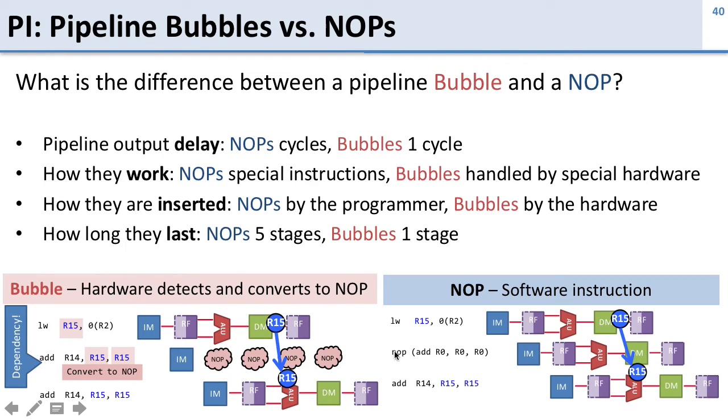The instruction to a NOP - so it puts in the NOP. And if we just use a NOP outright, it's a software instruction, so the software, the compiler, has to insert it. So the difference between them is just how they're inserted. They have the same effect on the output delay and the performance, and they do the same sorts of things. One is inserted by the software, the other is inserted by the hardware.